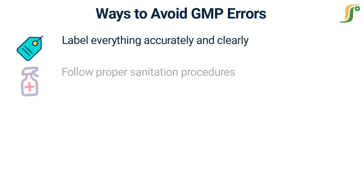Follow proper sanitation procedures. Proper sanitation procedures are essential for preventing the spread of bacteria and other contaminants. This includes washing hands regularly, using appropriate protective equipment and clothing, and cleaning and sanitizing all equipment and surfaces that come into contact with the product.